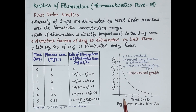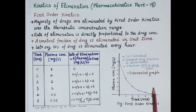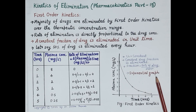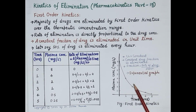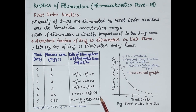If we plot a graph of time in hours versus plasma concentration in mg per litre using these values, we get an exponential curve. Very important to note: the majority of drugs are eliminated by first order kinetics over the therapeutic concentration range. In first order kinetics, clearance remains constant and a constant drug fraction is eliminated. In this example, we considered that 50% of the drug is eliminated per hour.